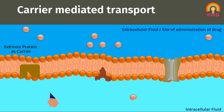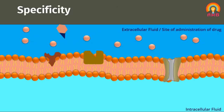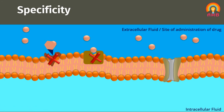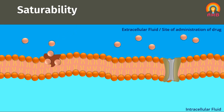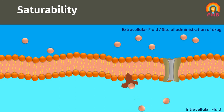We will discuss these terms one by one. Specificity means specific molecules bind to their own specific carrier molecule, which has a lock and key fit mechanism. One drug cannot bind to the carrier of another drug having a different configuration. Saturability means if all carrier molecules are occupied by drug molecules, further transportation of drug stops. Until the saturated carrier molecules become free, further transportation of drug cannot occur.